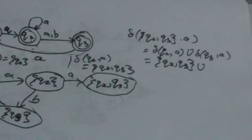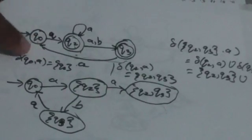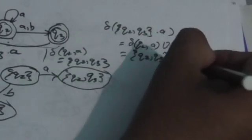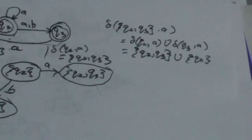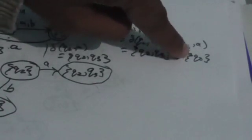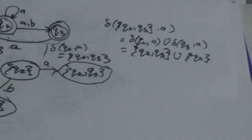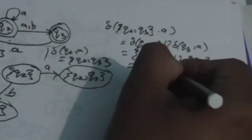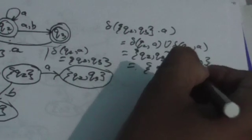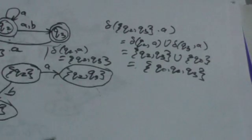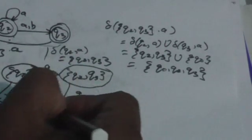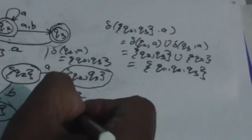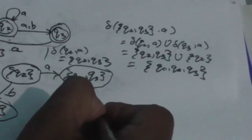Taking the union of {Q2, Q3} and {Q0}, the result is {Q0, Q2, Q3}. So we add this transition to the DFA: from state {Q2, Q3} on input A, the machine jumps to {Q0, Q2, Q3}.